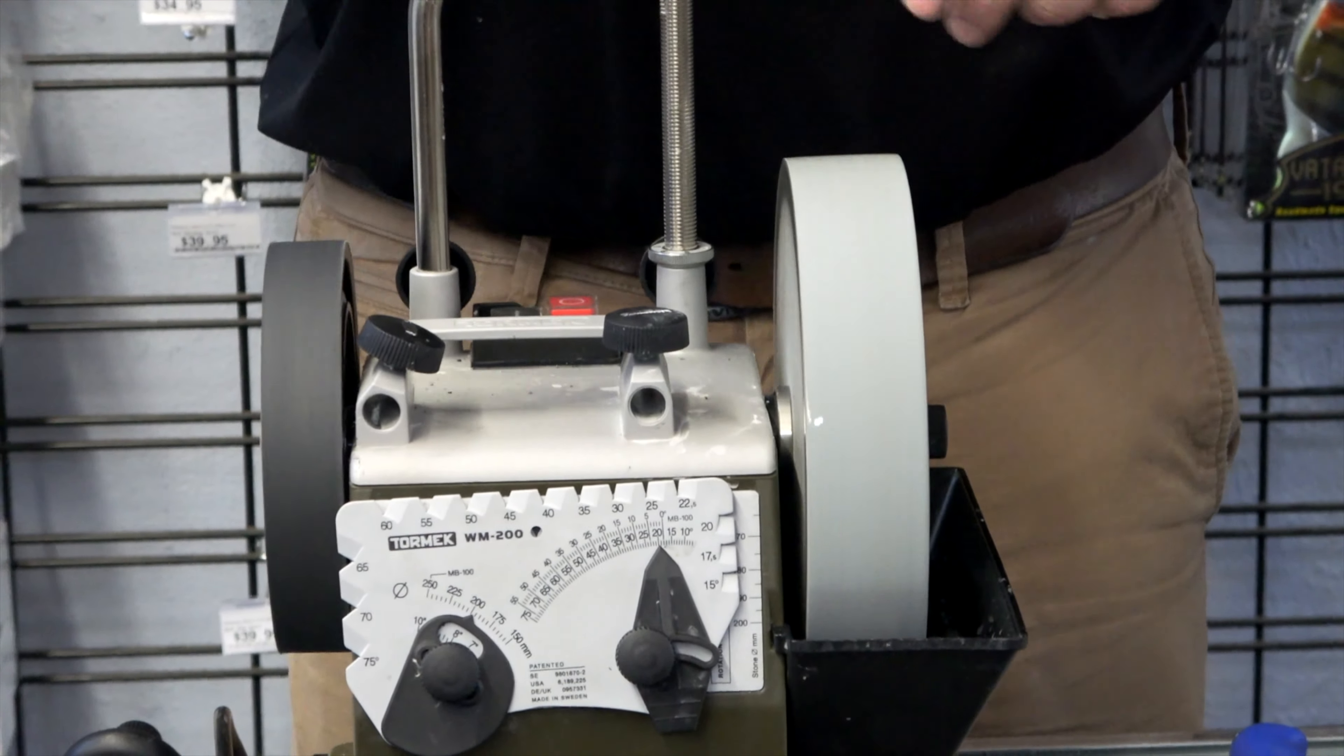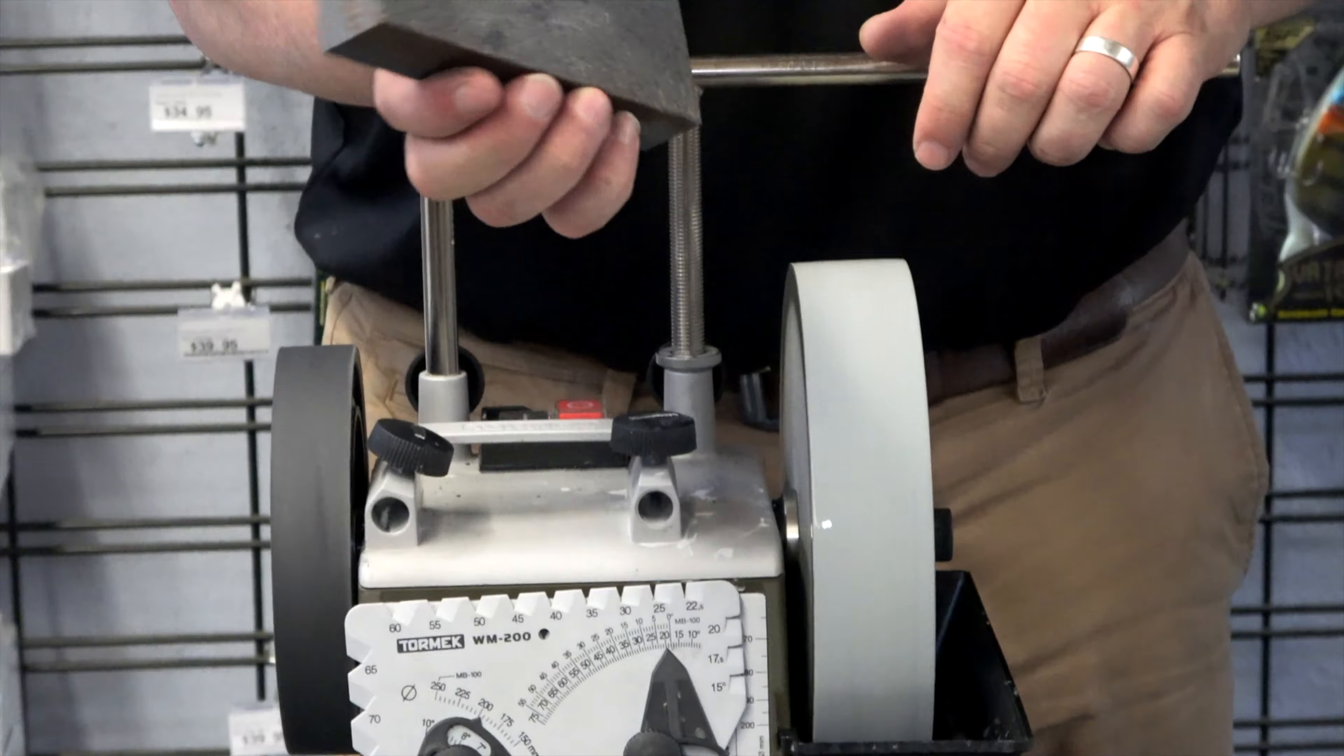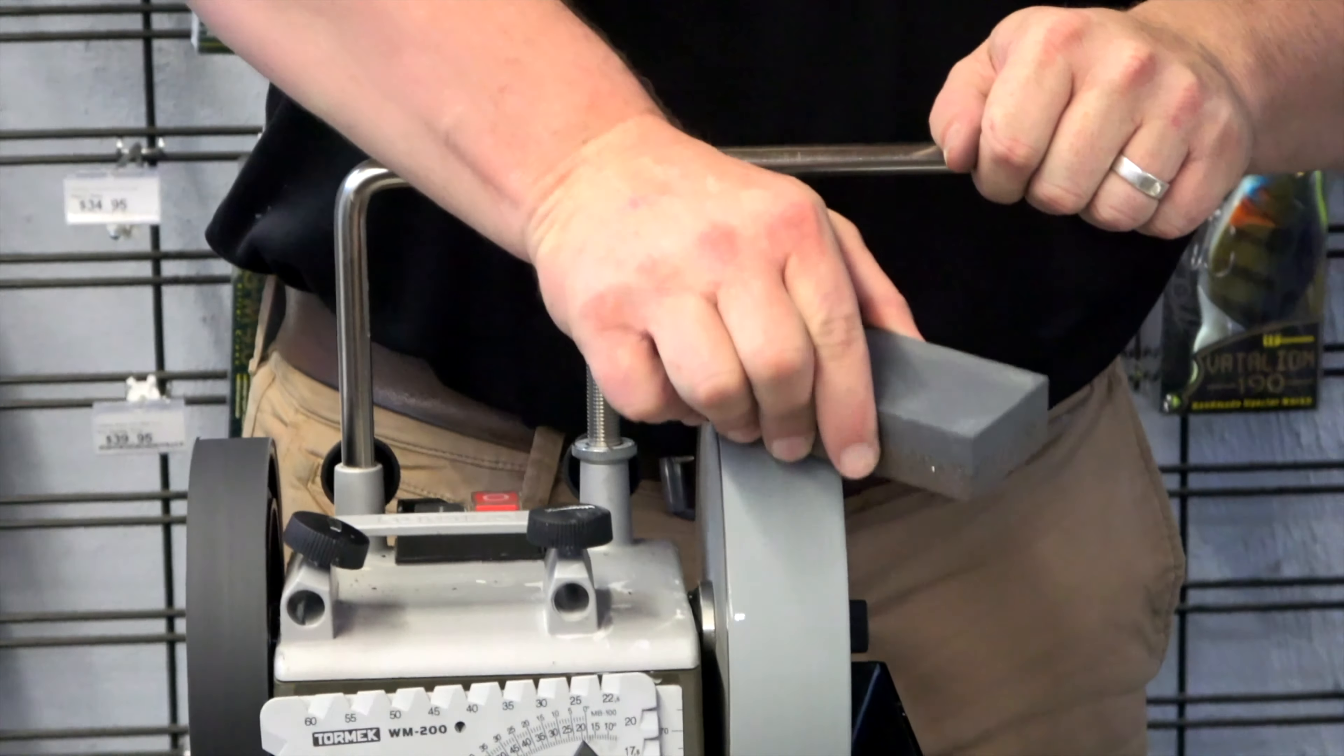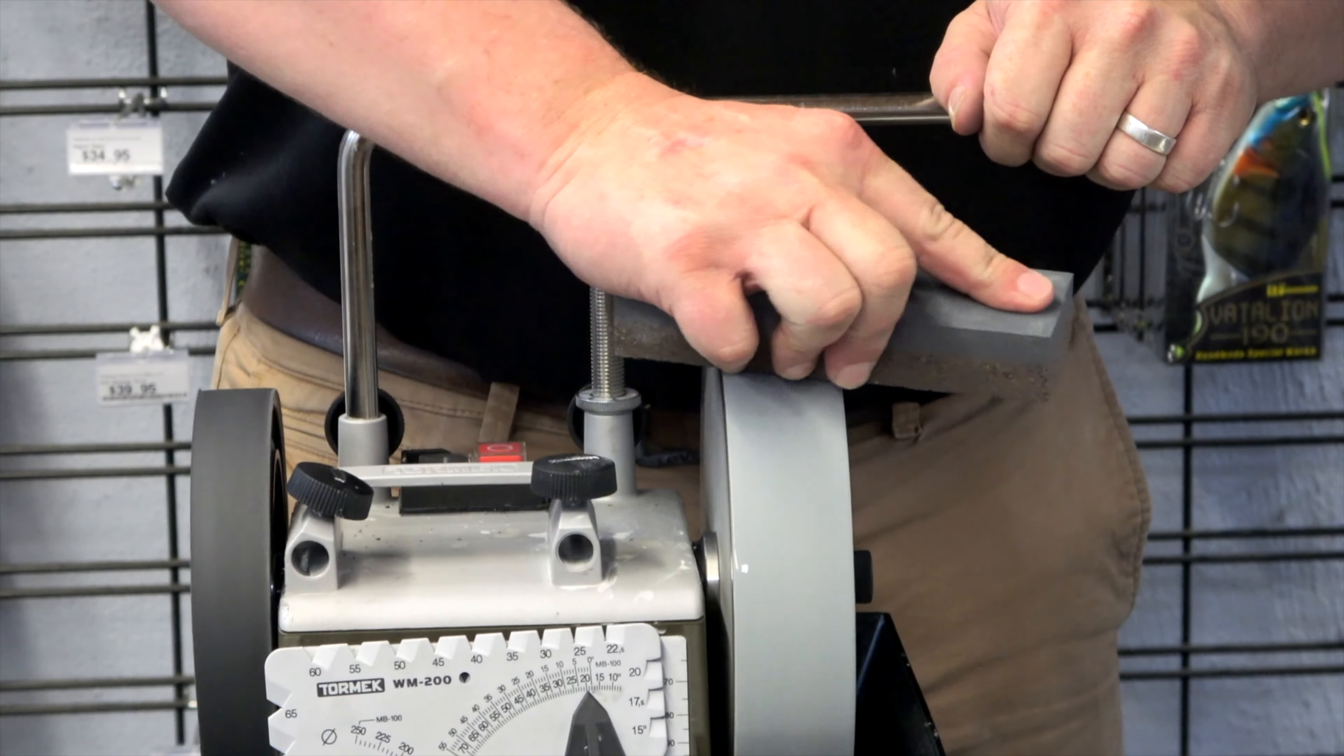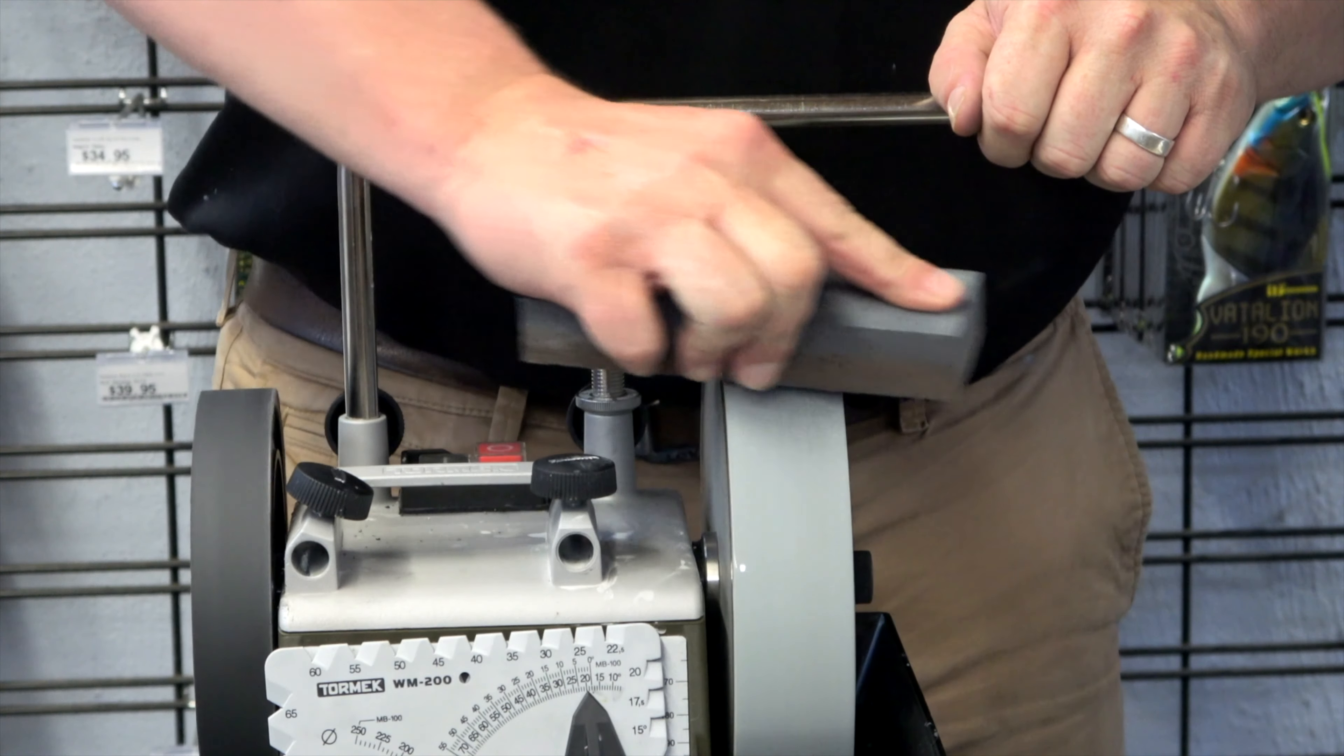So what we've got with the Tormac, because it's a new knife and I haven't sharpened it before, I'm going to use the stone grater here to take the wheel to a 220 grit. By using the stone grater, we're just going to rough the wheel.